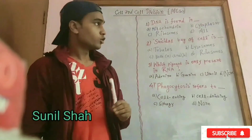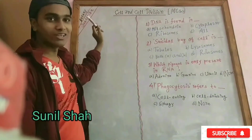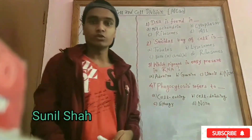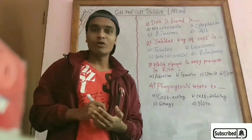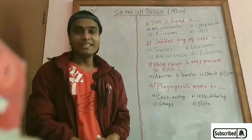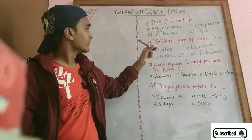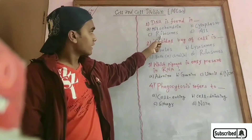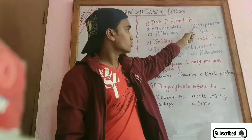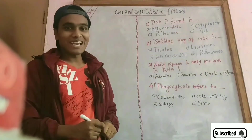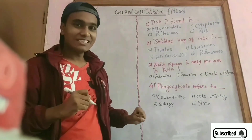Today I am discussing about cell division of biology. In question number one, DNA stands for deoxyribonucleic acid. Ribosomes are present in RNA, which stands for ribonucleic acid. Cytoplasm fluid contains cytosine. Thymine is present in DNA.